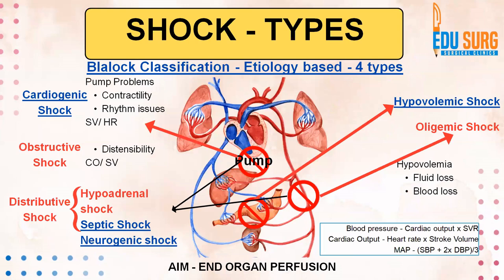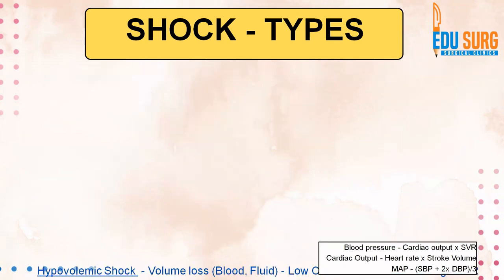Today we are going to continue our discussion on this slide. We have seen the formulas: blood pressure is cardiac output and systemic vascular resistance. Cardiac output is heart rate and stroke volume dependent. Mean arterial pressure is one third of systolic blood pressure added to two thirds of diastolic blood pressure. Once you remember these formulas, if one of these factors start getting affected, you are looking at a case of shock.